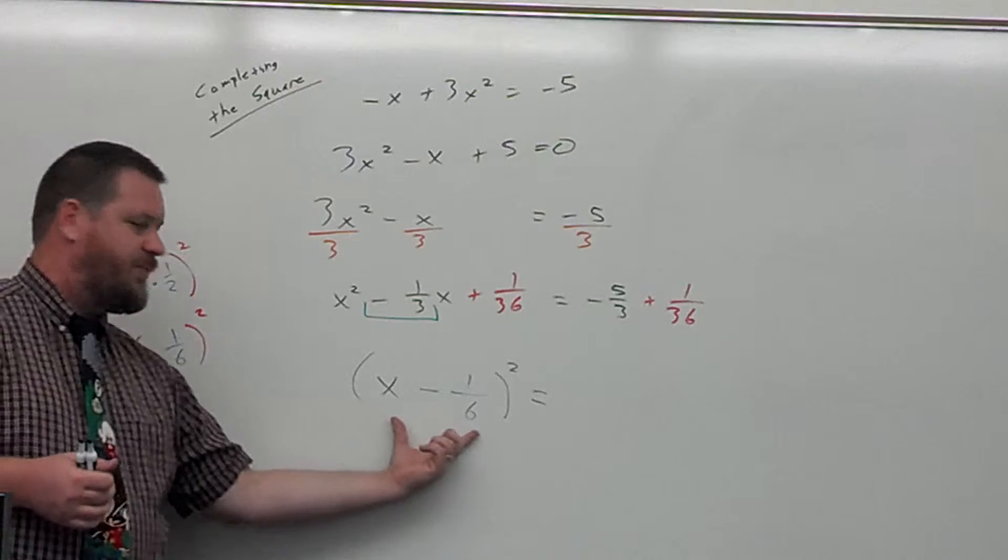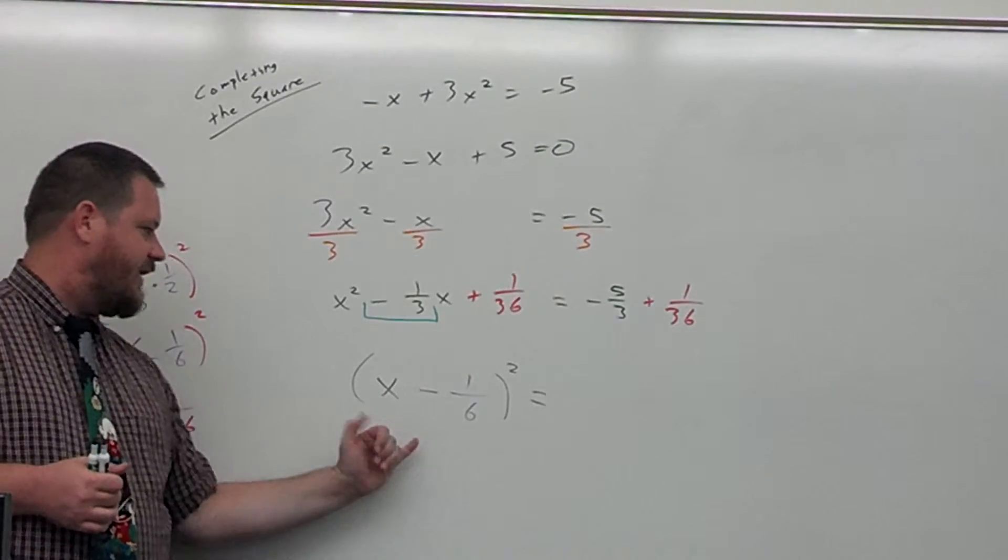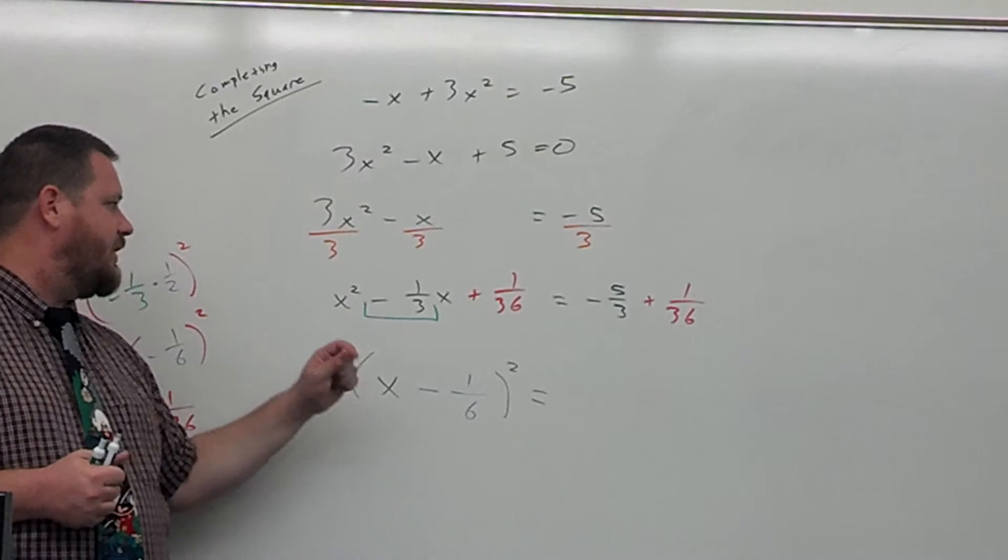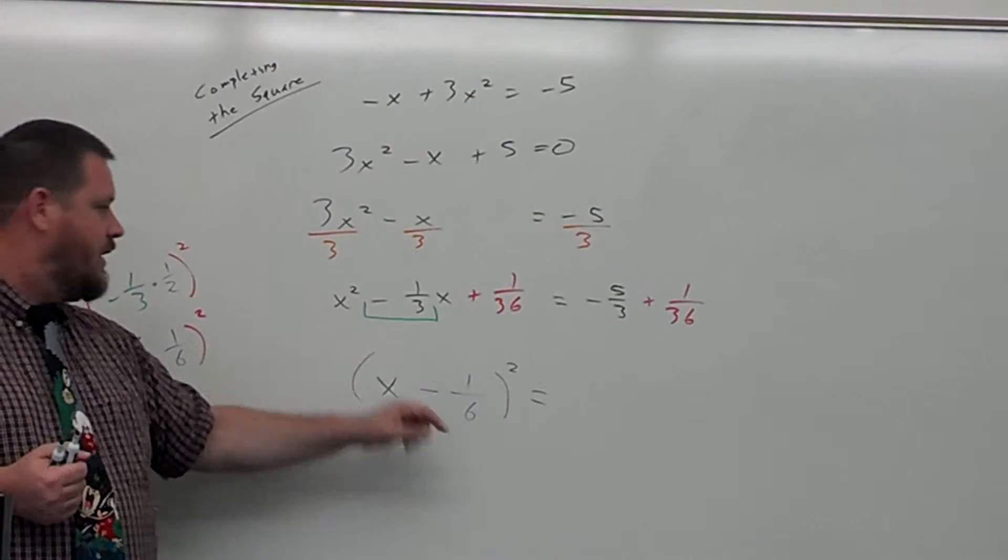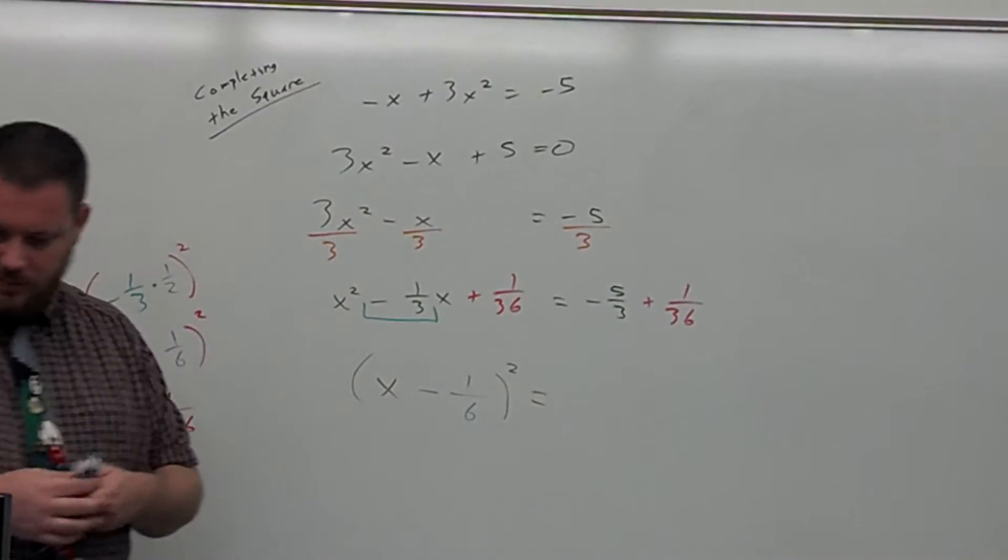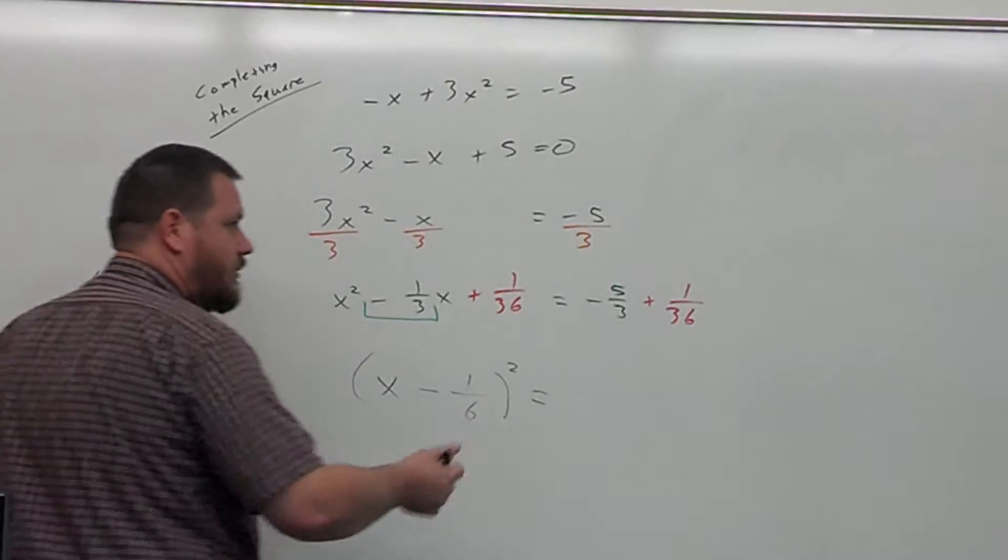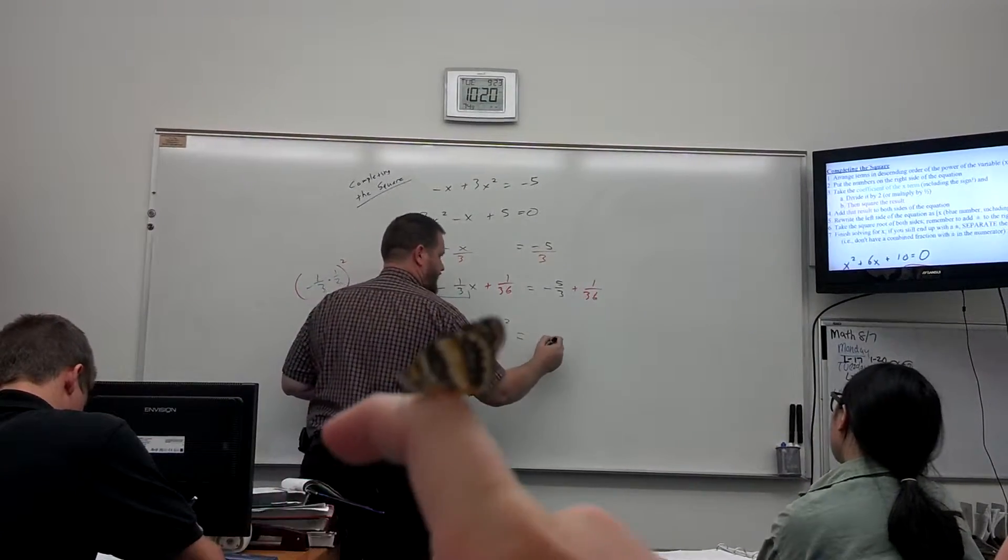And if I multiply this out, you could get this. Negative 1 sixth x minus another 1 sixth x would be negative 2 sixth x, which reduces to negative 1 third x. And the negative 1 sixth times negative 1 sixth is positive 1 over 36. What do I have on the right? What's negative 5 thirds plus 1 over 36?